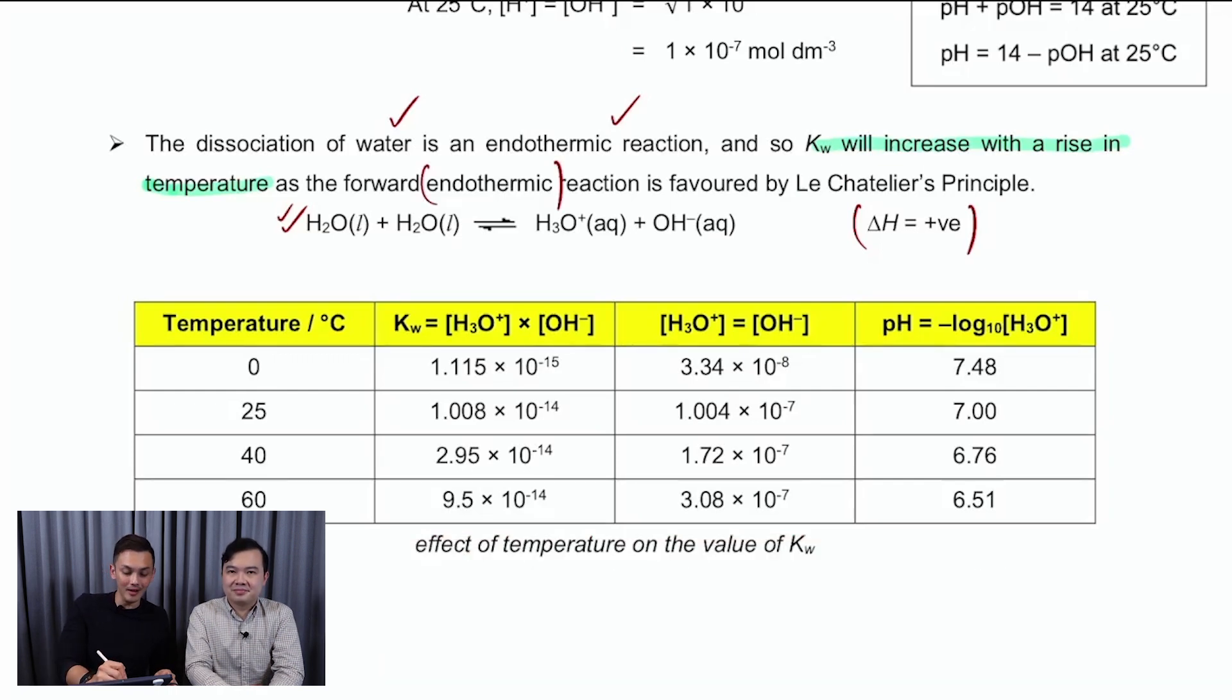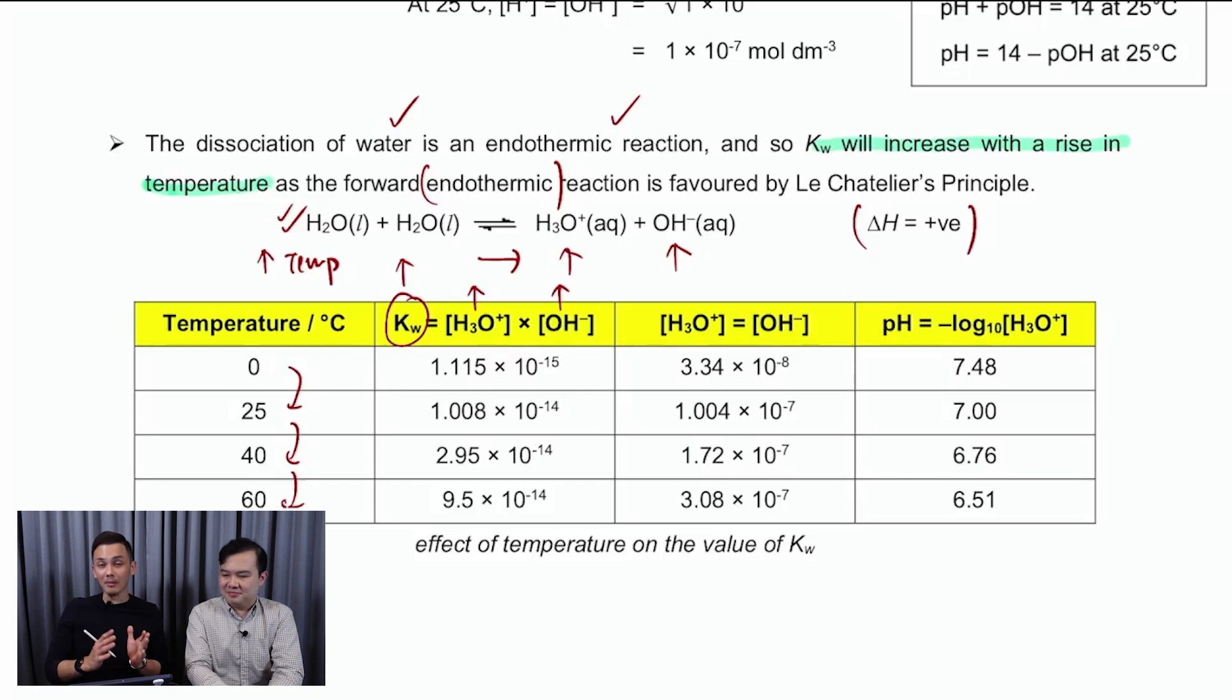How does this impact Kw when temperature changes? You can see from your notes, Kw should increase when there is an increase in temperature, simply because when you increase temperature, you're going to favor the forward reaction, which happens to be endo. So the thought process will be this. As I increase my temperature, the position of the equilibrium is going to shift forward. As it shifts forward, you're going to increase the amount of H3O+, you're also going to increase the amount of OH-.